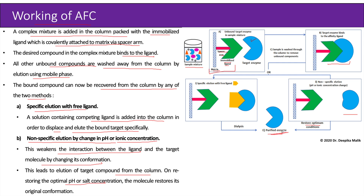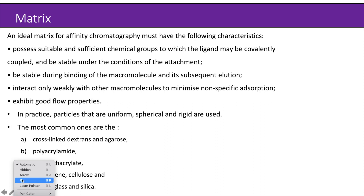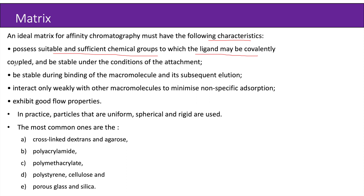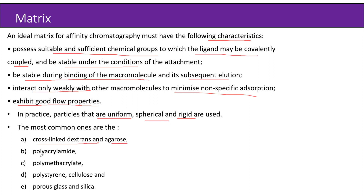Now let us learn about the matrix used for affinity chromatography. An ideal matrix must have the following characteristics: it should possess suitable chemical groups to which the ligand may be covalently coupled and be stable under attachment conditions. It should be stable during binding of the macromolecule and its subsequent elution. It should interact only weakly with other macromolecules to minimize non-specific absorption, and it should exhibit good flow properties. In practice, uniform, spherical, and rigid particles are used. The most common materials are cross-linked dextrans and agarose, polyacrylamide, polymethacrylate, polystyrene, cellulose, and porous glass and silica.